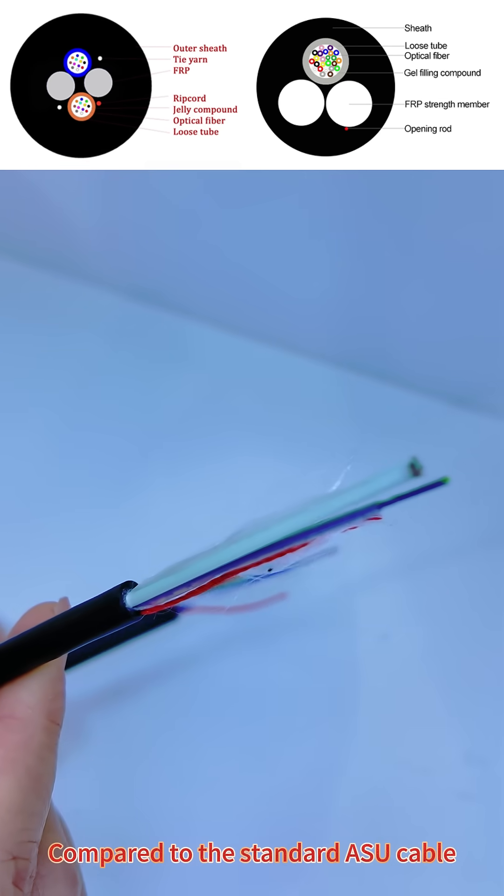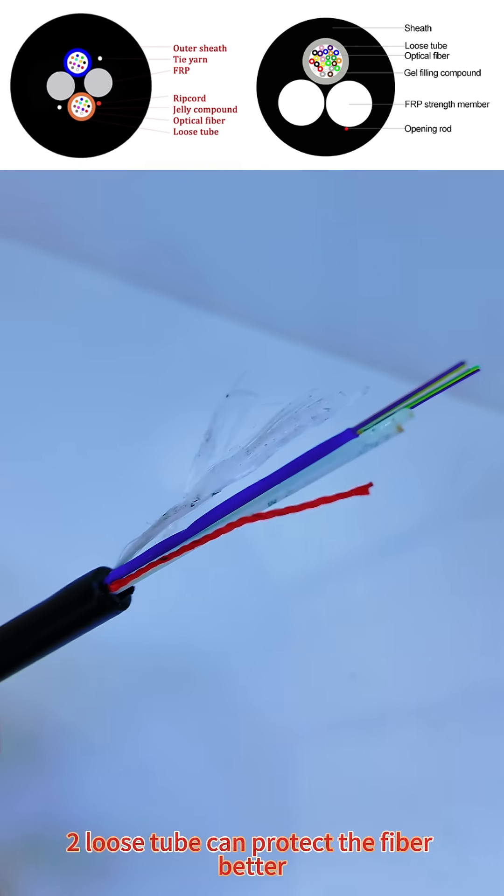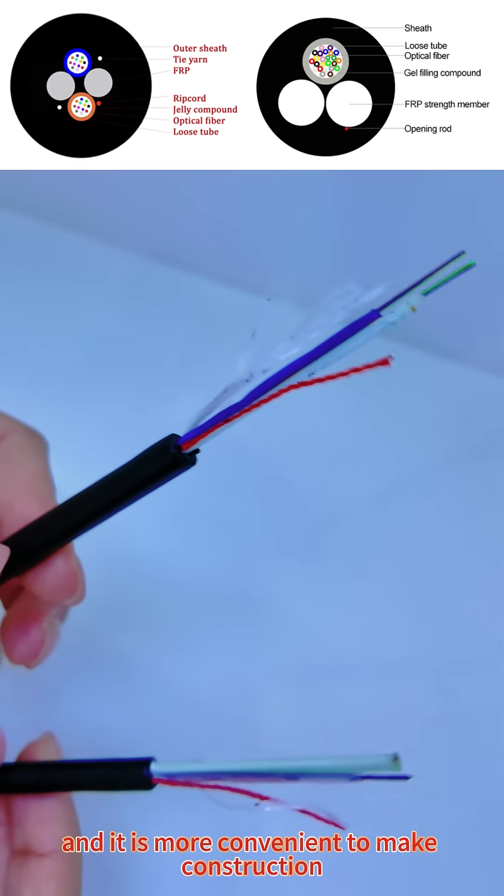Compared to the standard ASU cable, two loose tubes can protect the fiber better and it is more convenient to make construction.